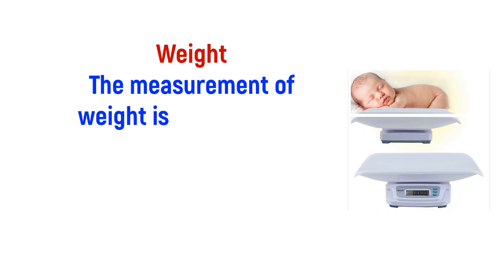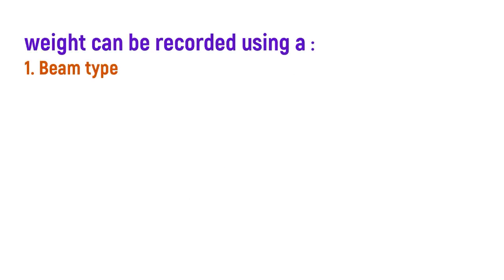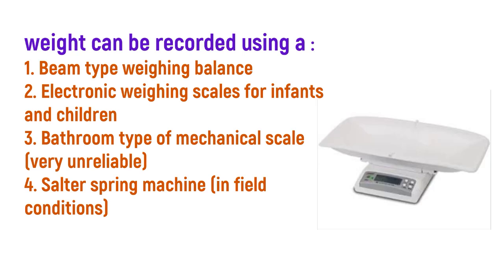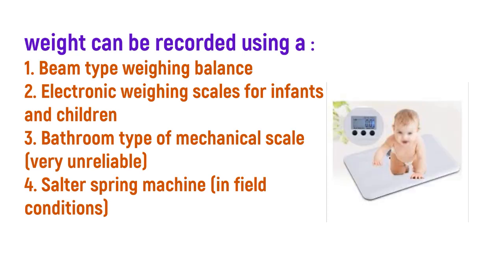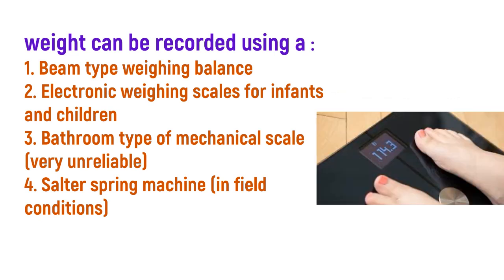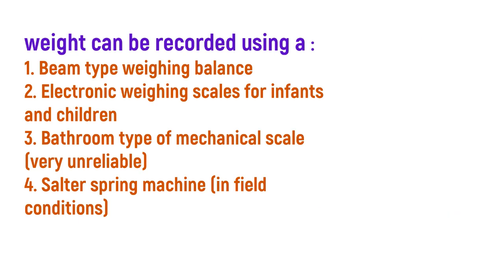Weight. The measurement of weight is the most reliable criteria for assessment of health and nutritional status of children. Weight can be recorded using: 1. Beam type weighing balance. 2. Electronic weighing scales for infants and children. 3. Bathroom type mechanical scale (very unreliable). 4. Salter spring machine, in field conditions.